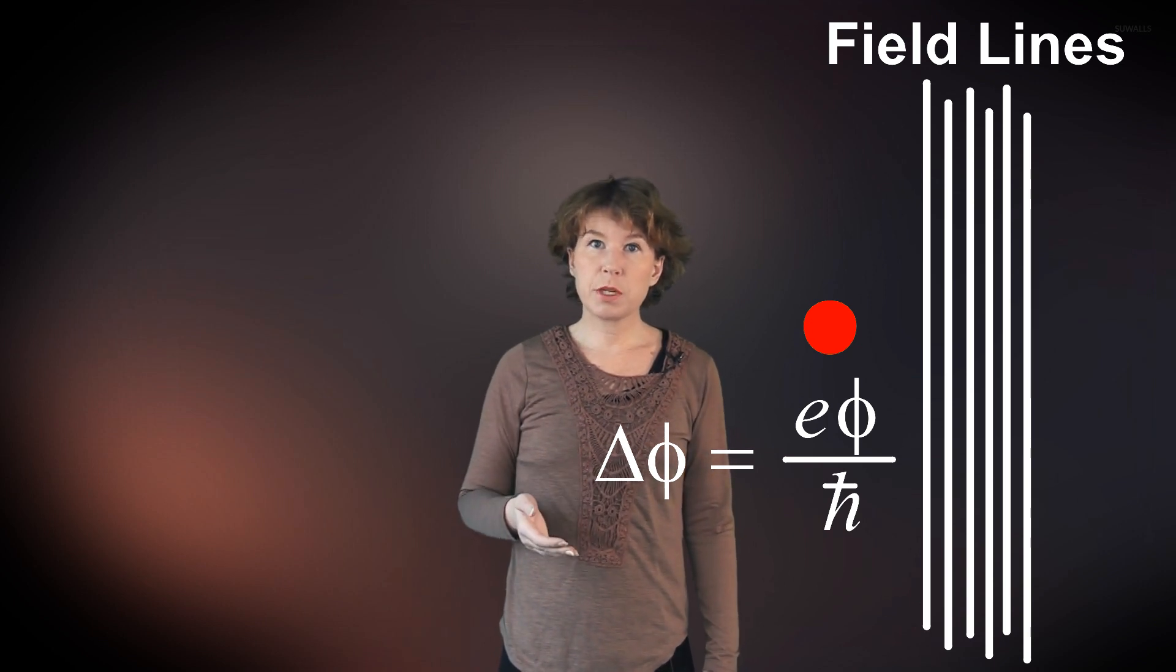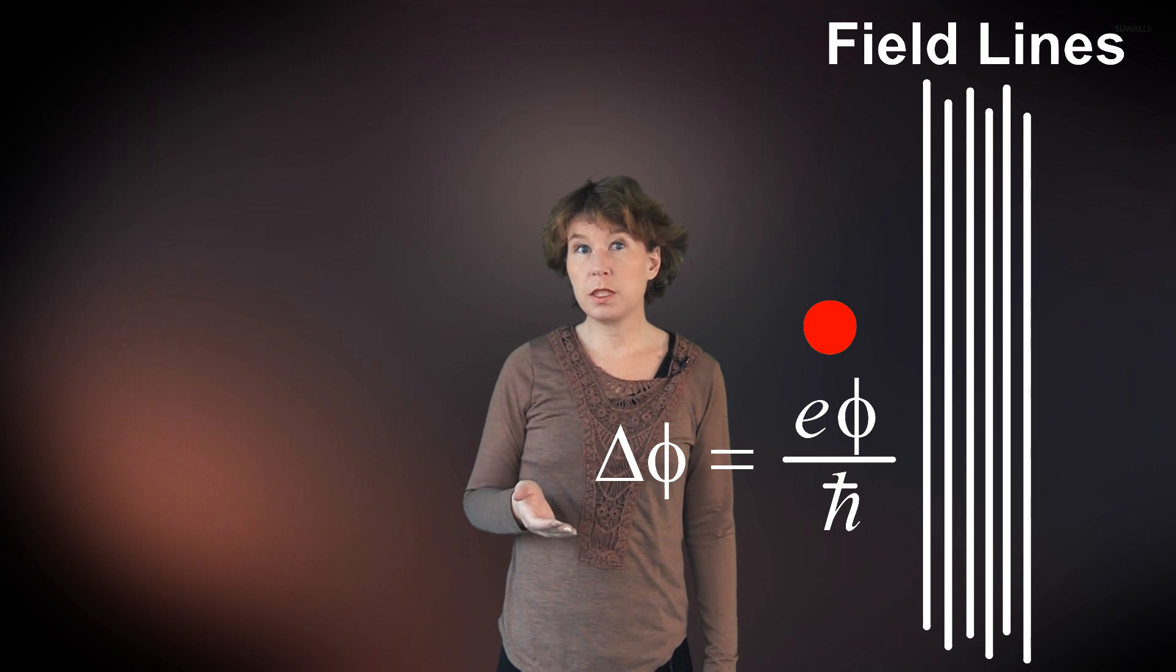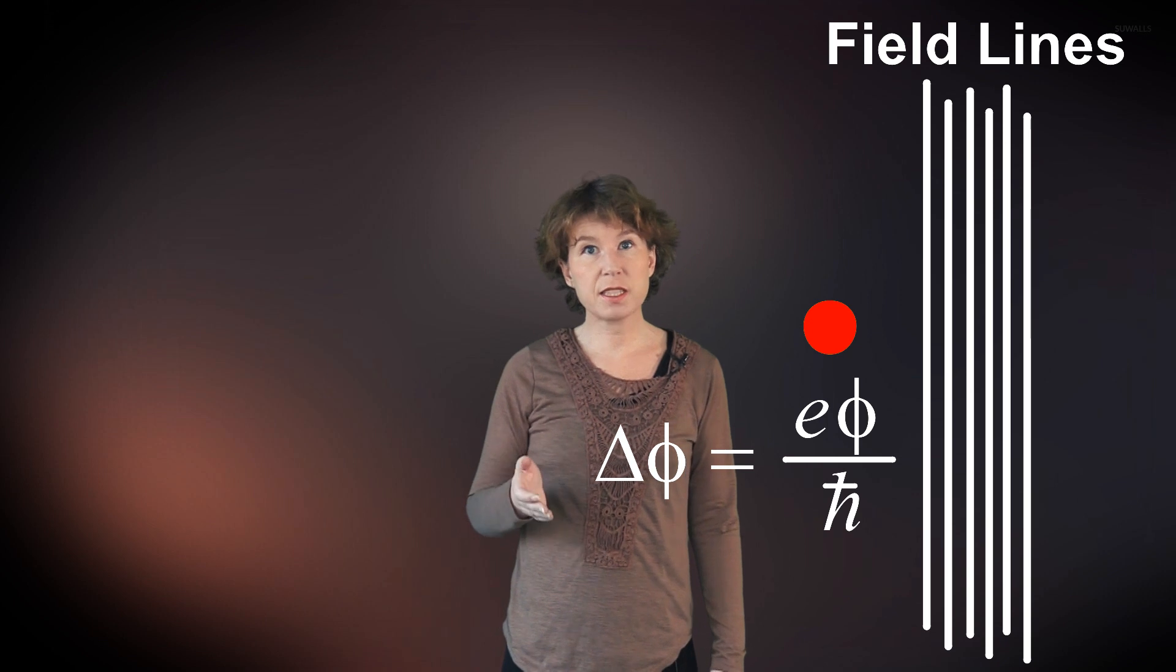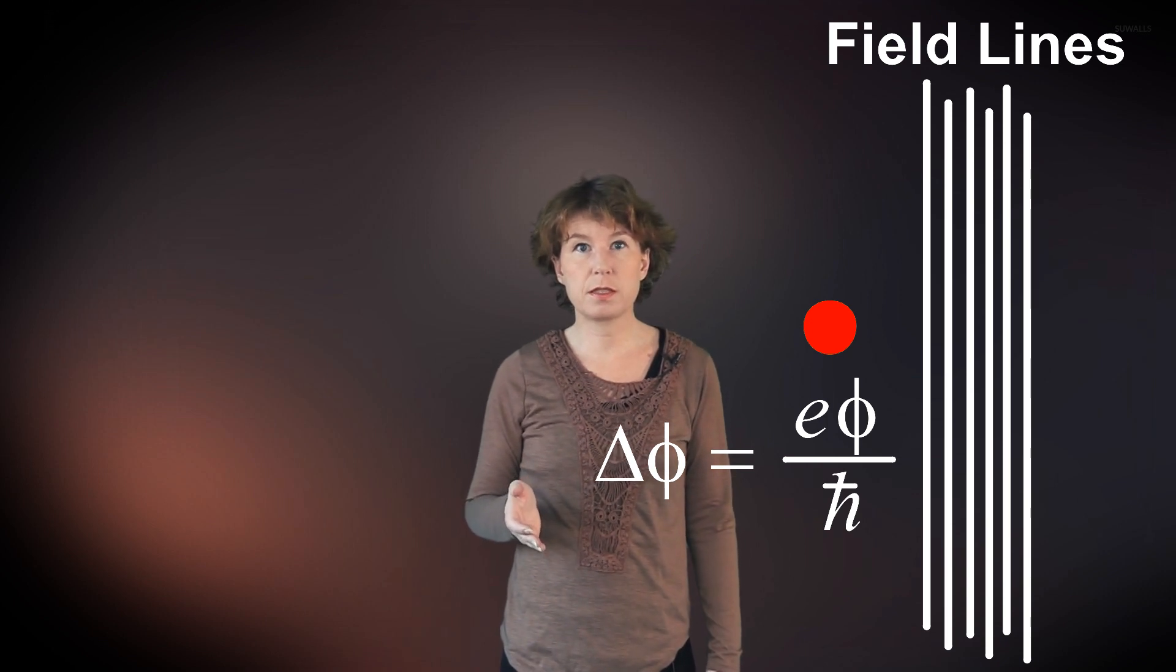In electrodynamics, the potential itself is normally not observable. But this phase shift in the Aharonov-Bohm effect can and has been observed in interference patterns. And this tells us that the potential is not merely a mathematical tool. Before the Aharonov-Bohm effect, one could reasonably question the physical reality of the potential because it was not observable.